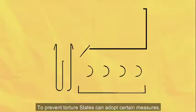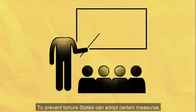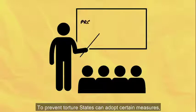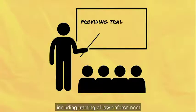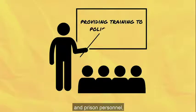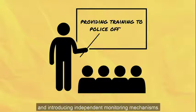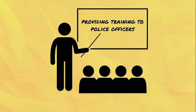To prevent torture, states can adopt certain measures, including training of law enforcement and prison personnel, and introducing independent monitoring mechanisms.